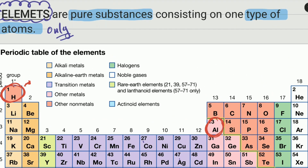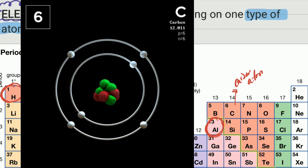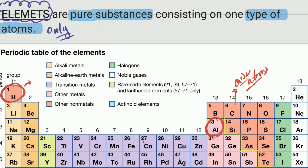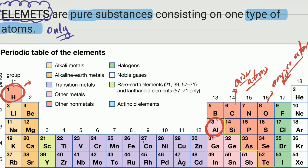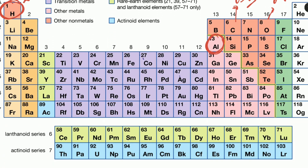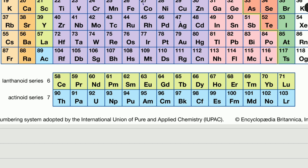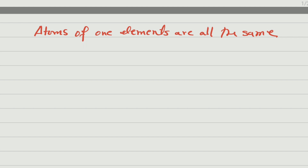Remember, here is the definition: elements are pure substances consisting of one type of atom. There are many elements, and each element is made of its own type of atom. For example, carbon is made of carbon atoms — all the atoms that carbon has are only carbon atoms. Oxygen is made of oxygen atoms, and all of them are exactly the same. That is a very important statement: all the atoms of the same element are exactly the same.